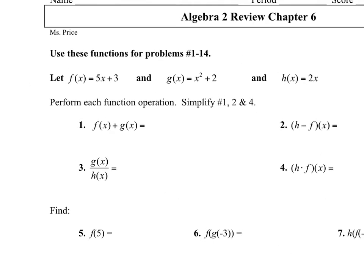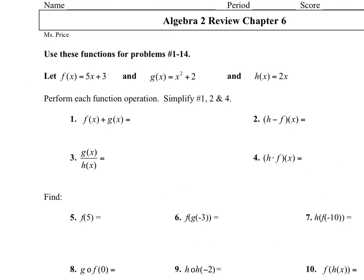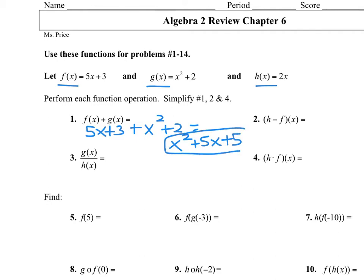Number one, we are using these functions here — f of x, g of x, and h of x — and we want to take f of x, which is 5x plus 3, and add g of x. So we're going to combine these two functions and combine all like terms. The x squared doesn't have a friend, it stays by itself, and neither does the 5x, but 3 plus 2 is 5. So that would be the answer to number one.